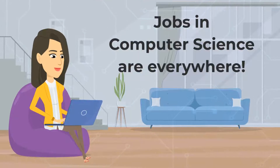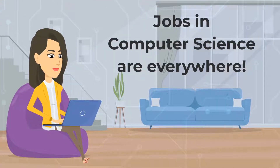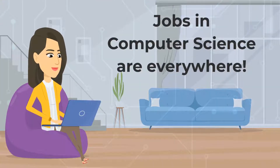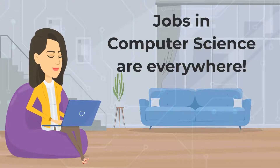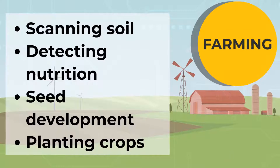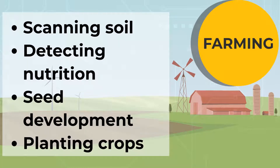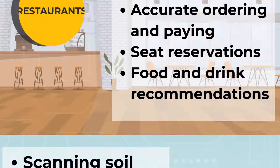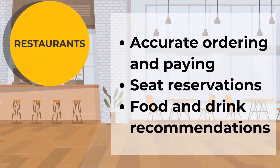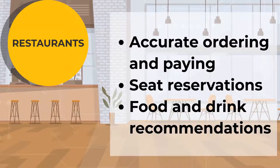What are some jobs that might use computer science? More than you probably think, and even in areas you might not necessarily think of at first. Computer science is used in farming to scan soil, detect nutrition, determine the development of seeds, or even planting crops. It is used in restaurants, allowing customers to order and pay with accuracy, allow seat reservations before you even arrive, or even drink suggestions based on a food order.